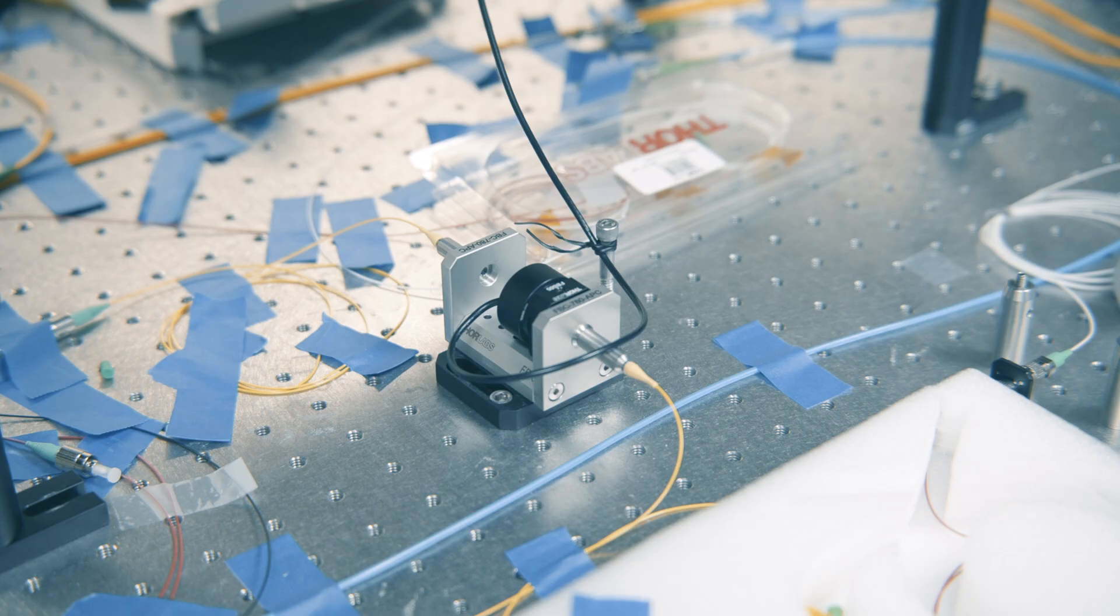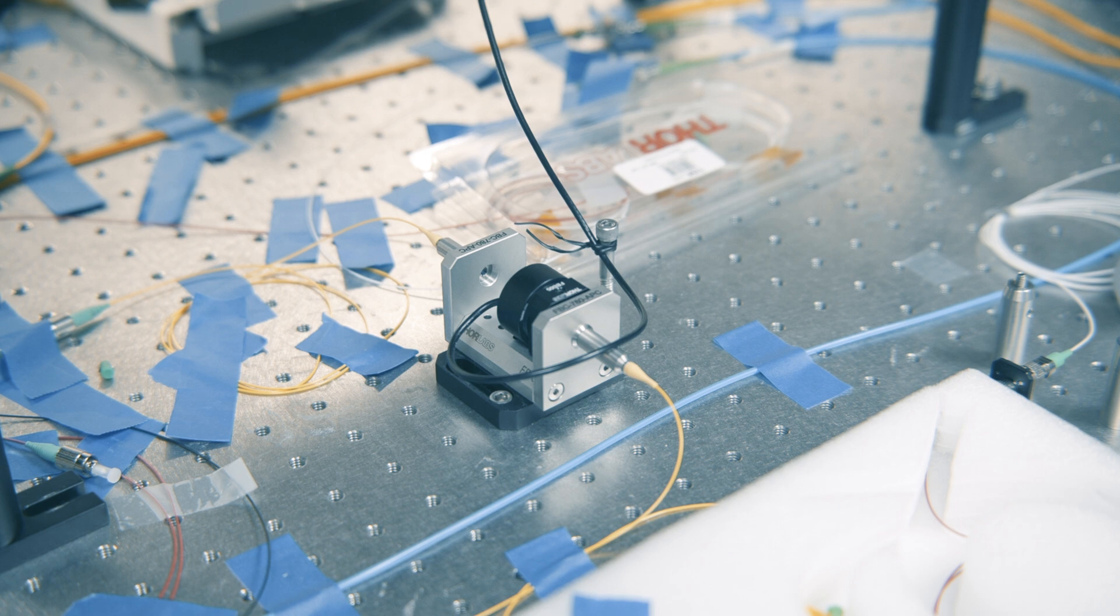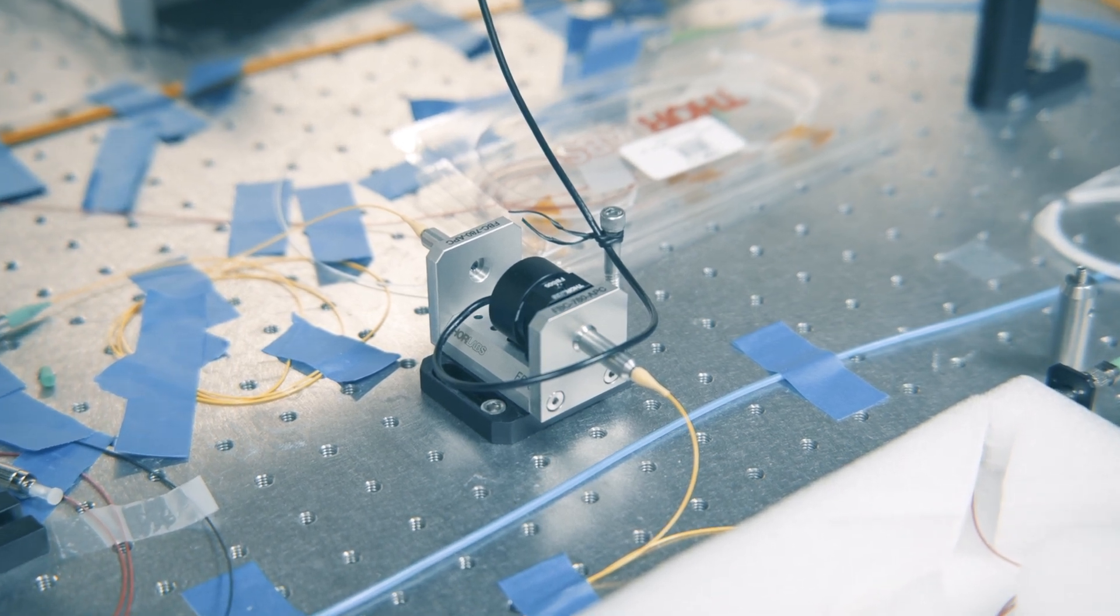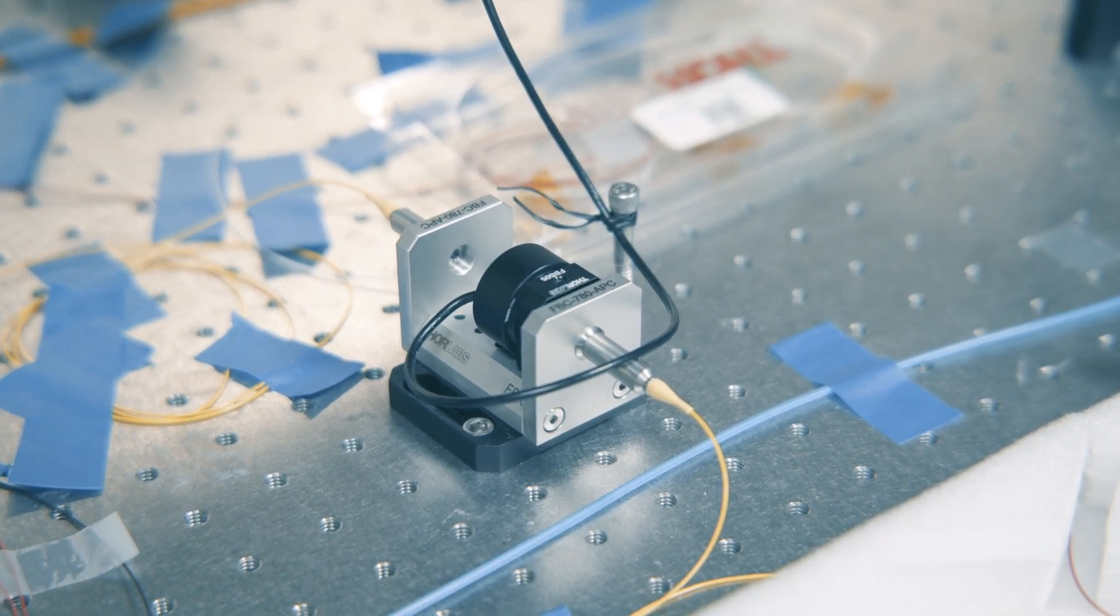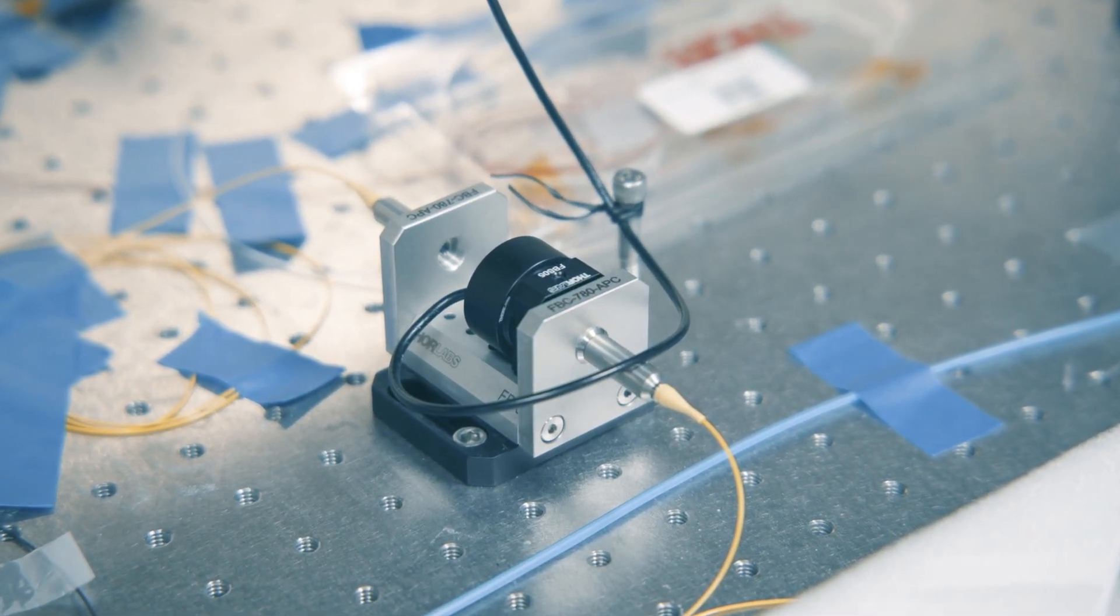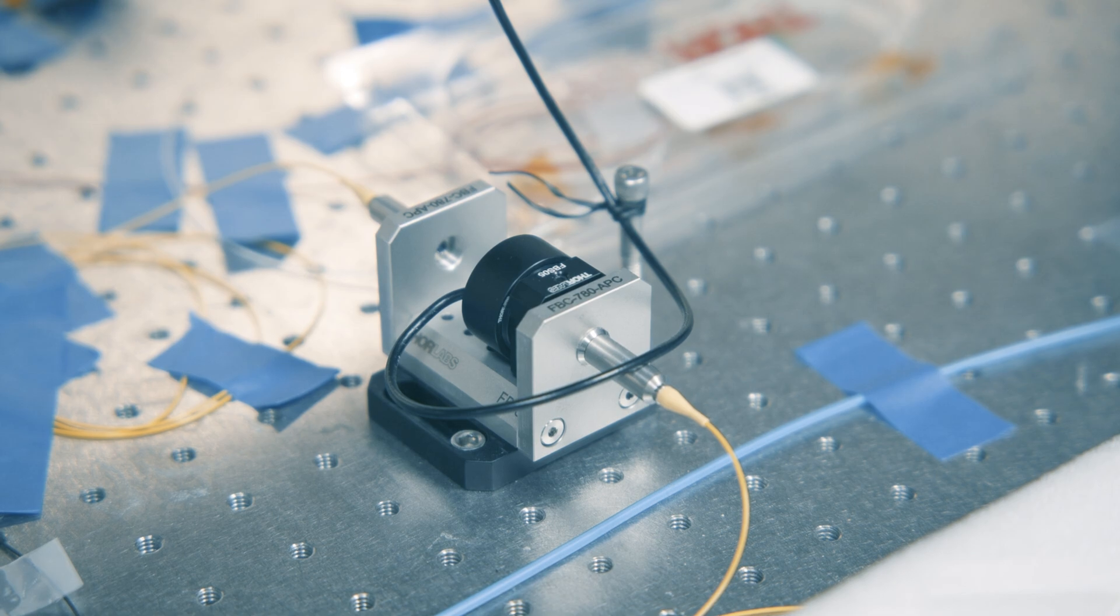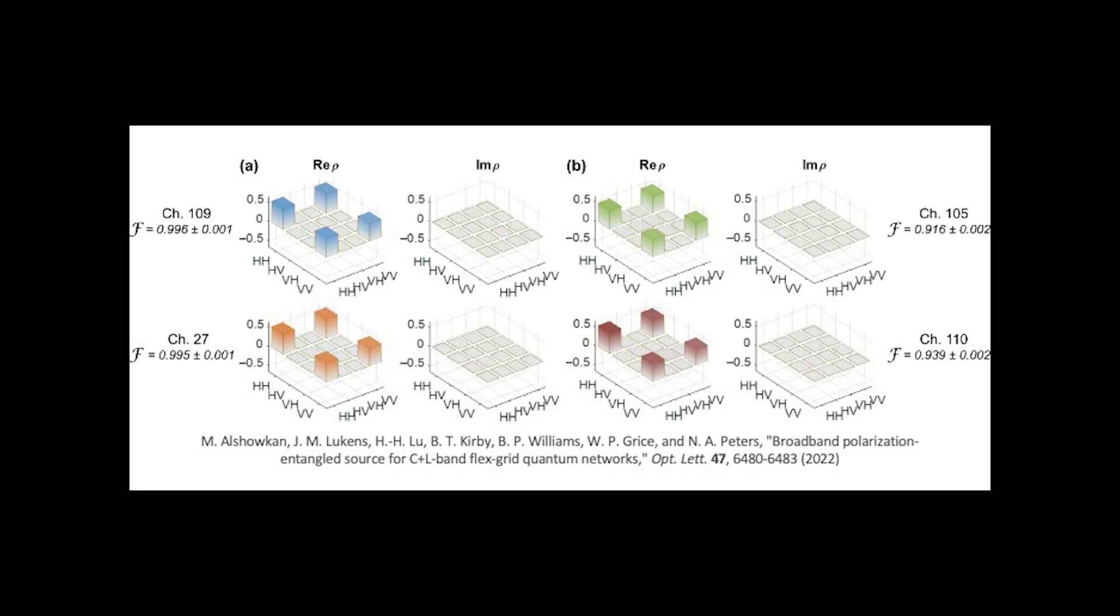Ideally, the output is a coherent superposition of two counter-propagating pair generation processes, resulting in a quantum state described as alpha-HH plus beta-VV. The alpha and beta coefficients are determined by the pump splitting ratio in the Sagnac Loop. We actively monitor the pump power circulating in both directions and send feedback signals to this liquid crystal wave plate to control the pump polarization. This allows us to adjust the splitting ratio in real time, maintain the alpha-beta values equal over many hours or even days, creating a maximally entangled state, known as the polarization bell state.